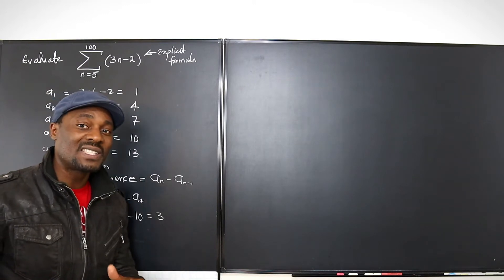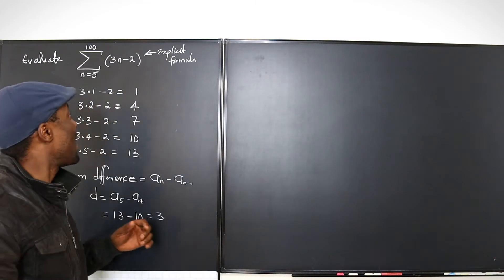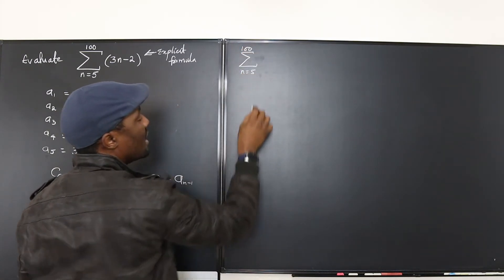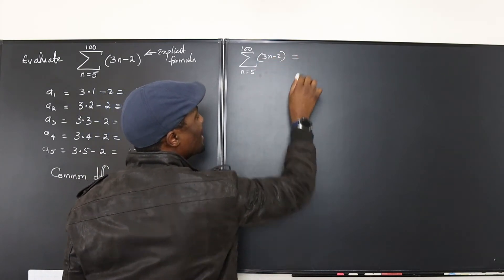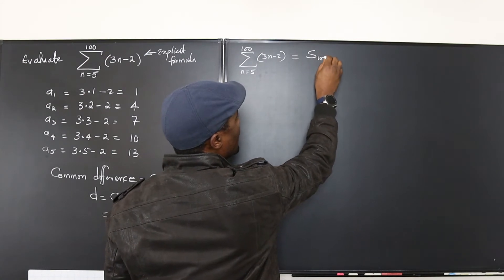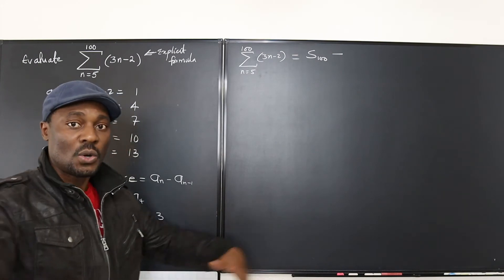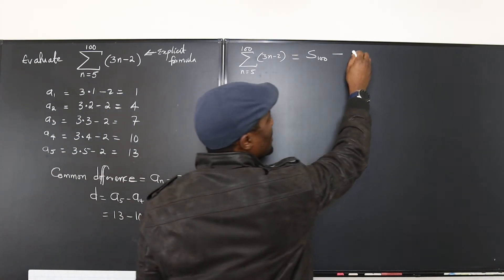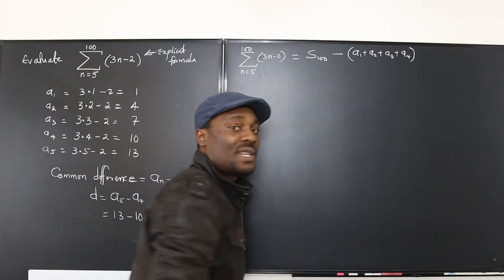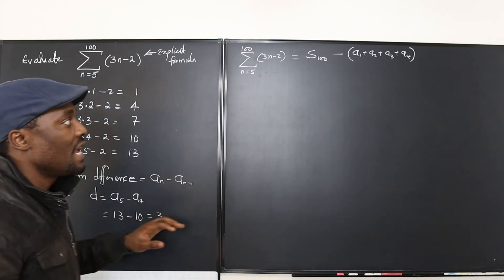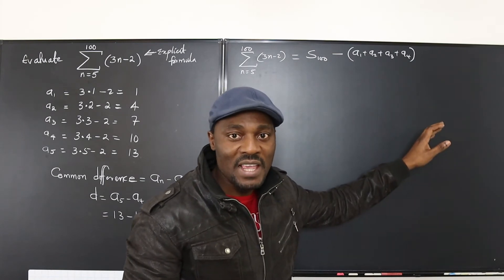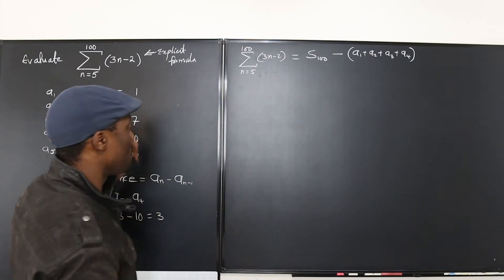Our task is to add terms from n=5 to n=100 of 3n − 2. This is the same as adding the entire first 100 terms and then subtracting the first 4 terms. So the sum from 5 to 100 equals S_100 minus S_4. We already calculated the first four terms individually, so we know their sum is 1 + 4 + 7 + 10 = 22.